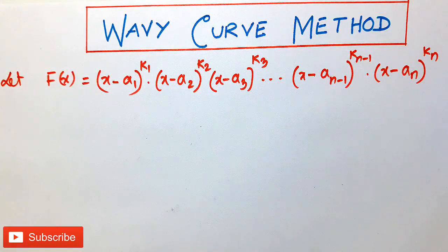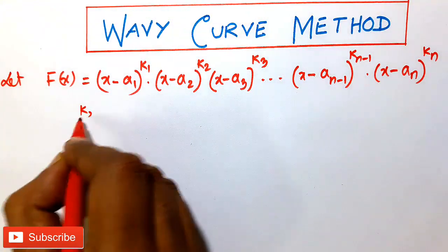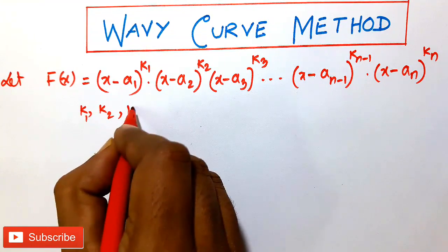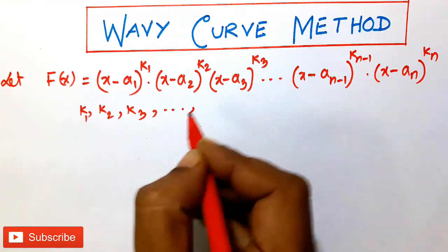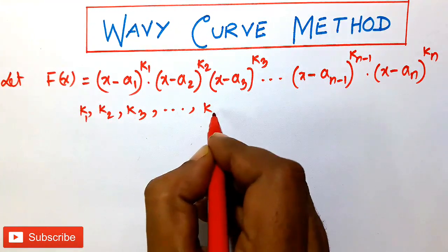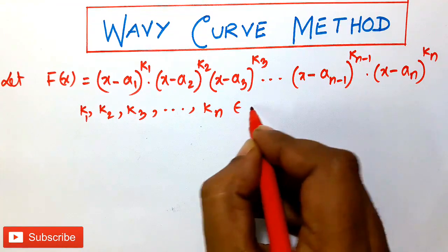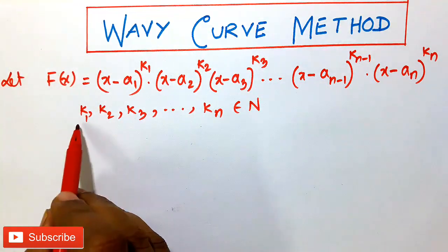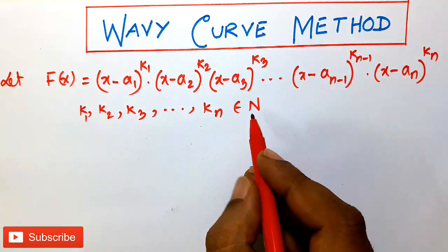Here k₁, k₂, k₃, and so on up to kₙ — all belong to the set of natural numbers N.